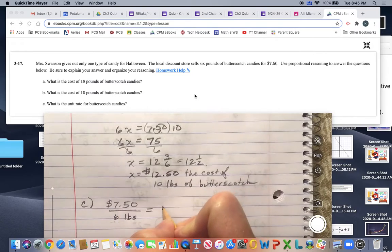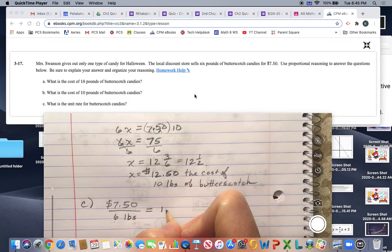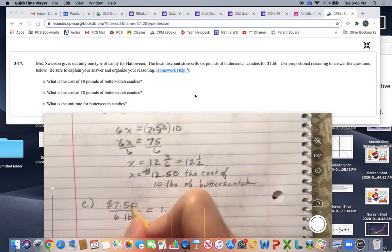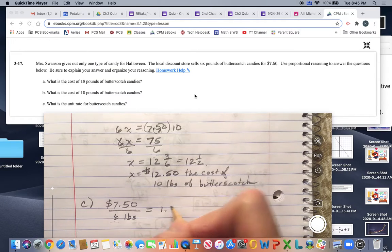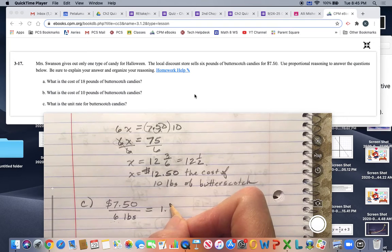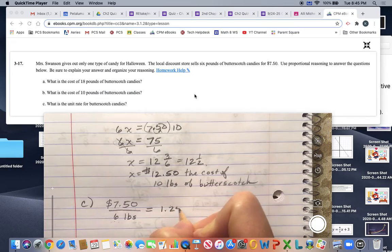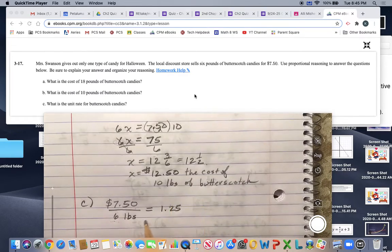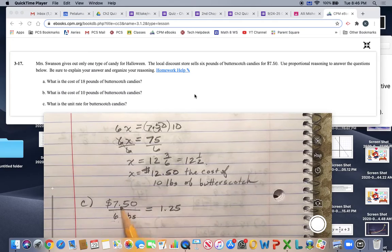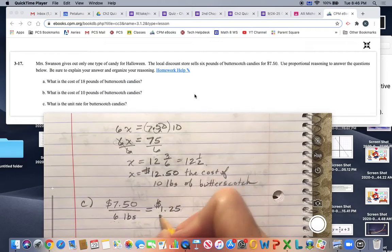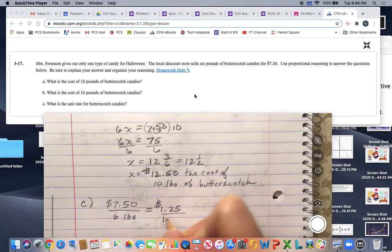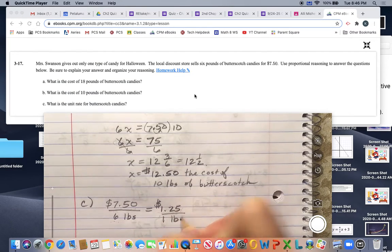That by 6. Let's see, 6 goes into 7 once, and then 6 goes into a dollar fifty. If we split that, 75 and then 25. Okay, so 6 goes into $7.50 this many times, and so it's $1.25 for each one pound of butterscotch.